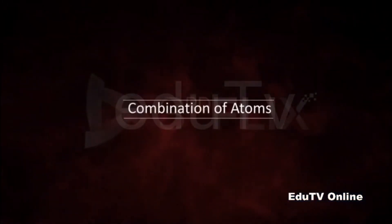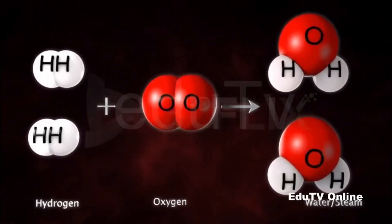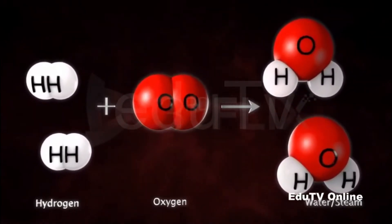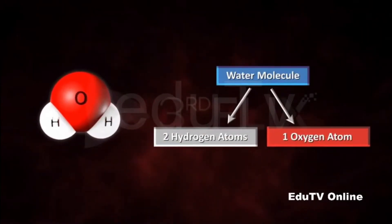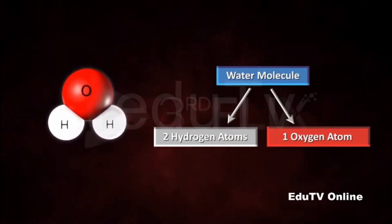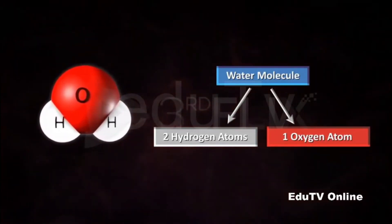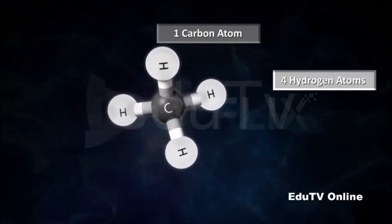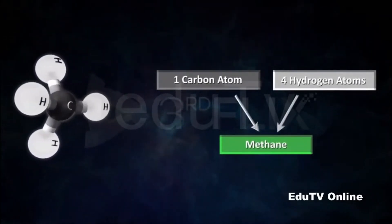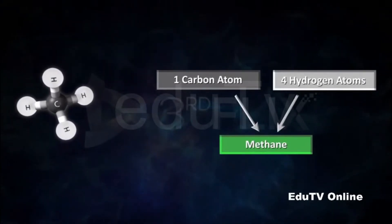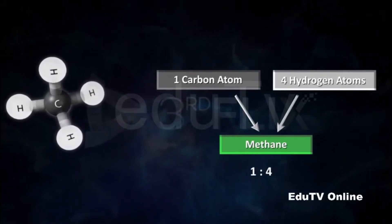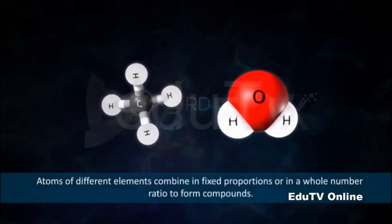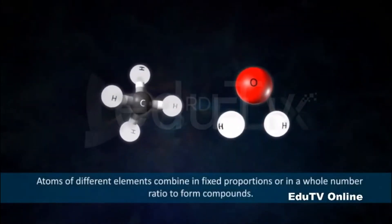Combination of atoms: Hydrogen atoms combine with oxygen atoms to form water molecules. Each water molecule has two atoms of hydrogen and one atom of oxygen, so the ratio of combination is 2:1. Similarly, one atom of carbon combines with four atoms of hydrogen to form one molecule of methane, with a ratio of 1:4. Dalton concluded that atoms of different elements combine in fixed proportions or in a whole number ratio to form compounds.